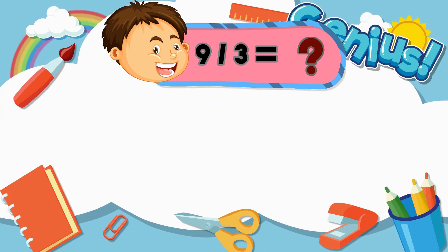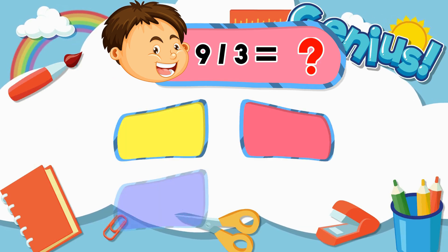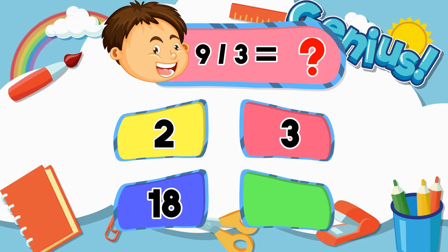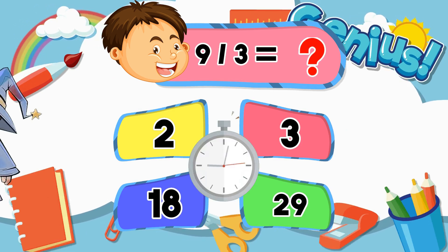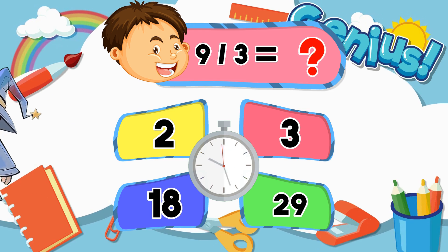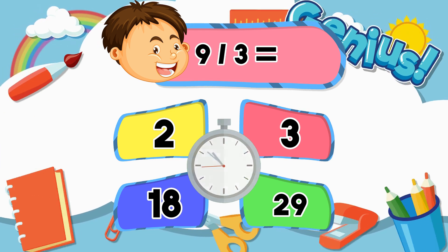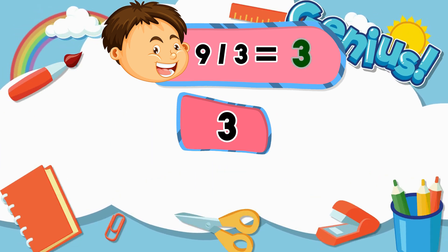What is nine divided by three? Two, three, eighteen, twenty-nine. Three.